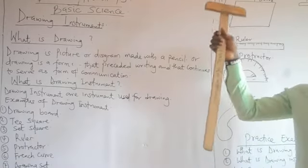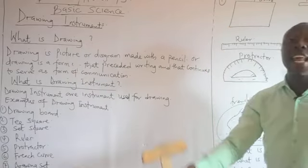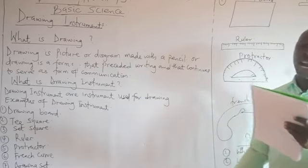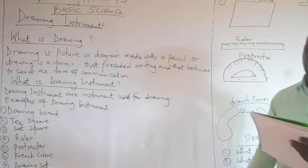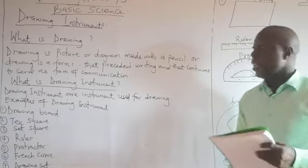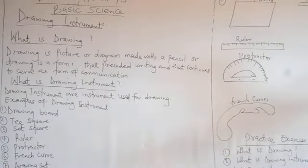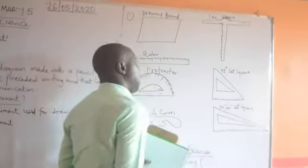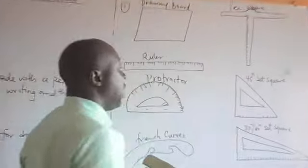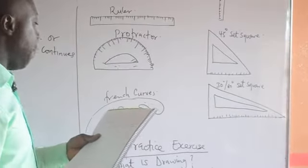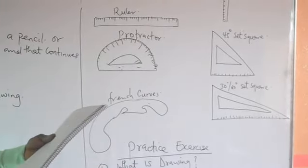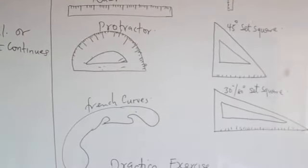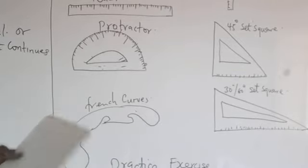A T-square can be used to draw horizontal lines and vertical lines. We also have the set square. A set square is a transparent plastic instrument. This is a good example of a 45-degree set square, and this is a 30-degree set square. There are two types: the 30-degree set square and the 45-degree set square, and it is used to draw horizontal and vertical lines.